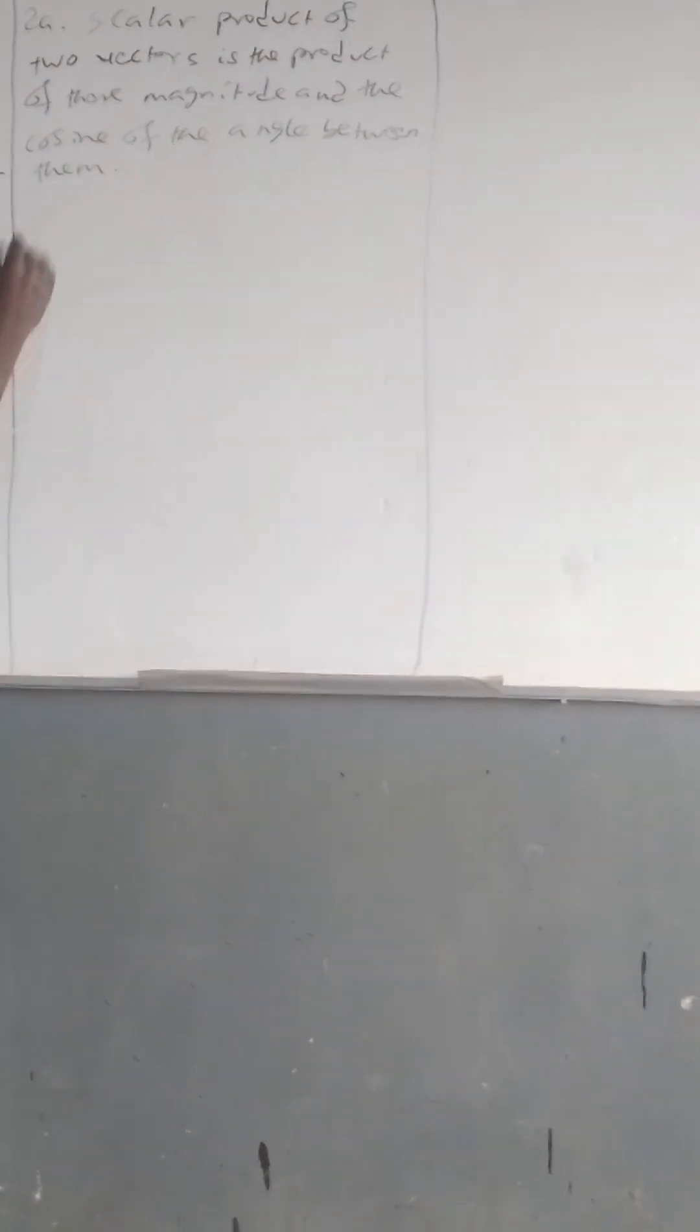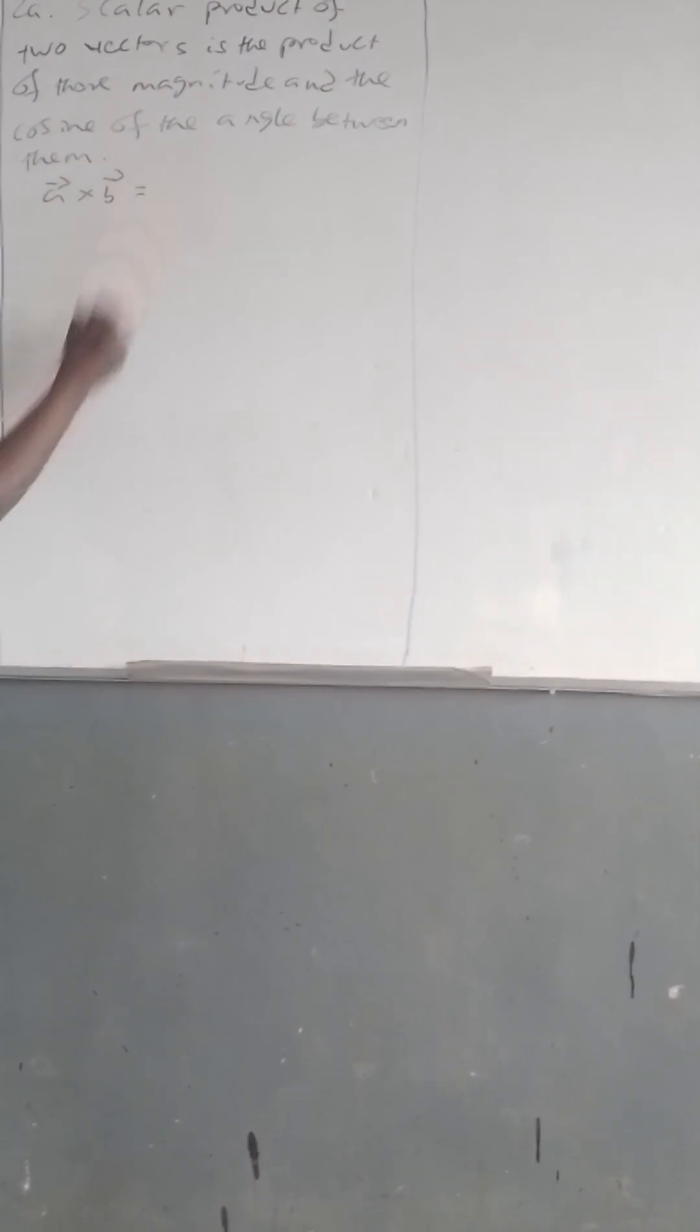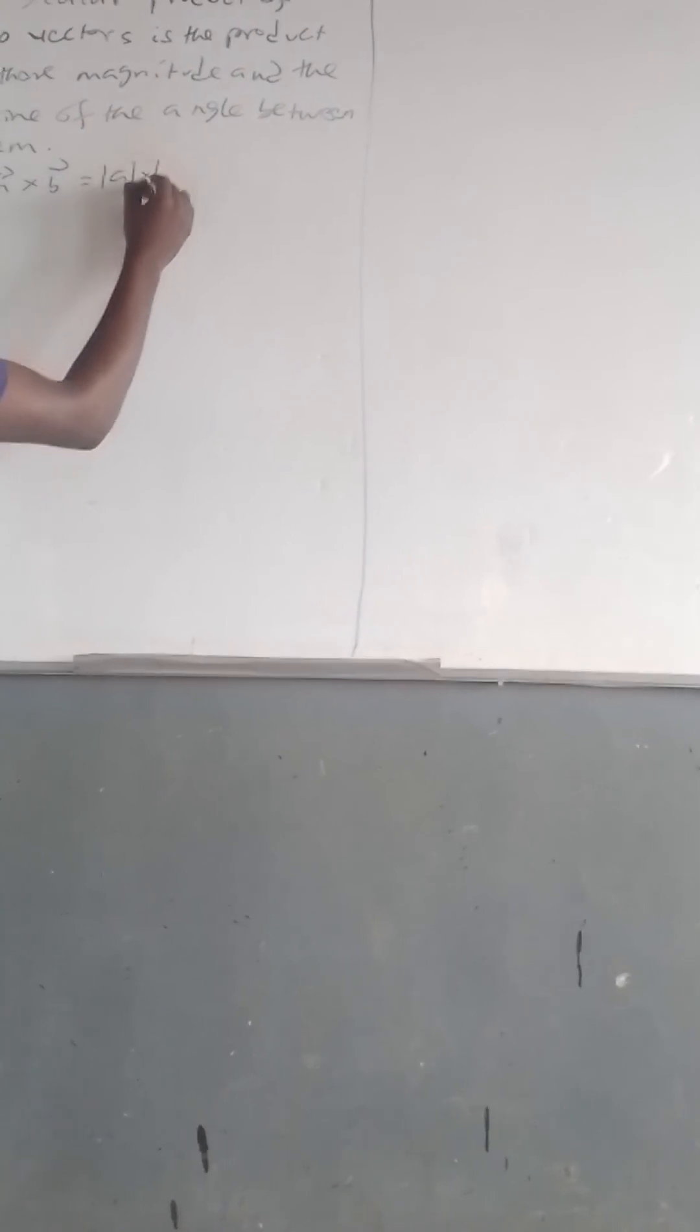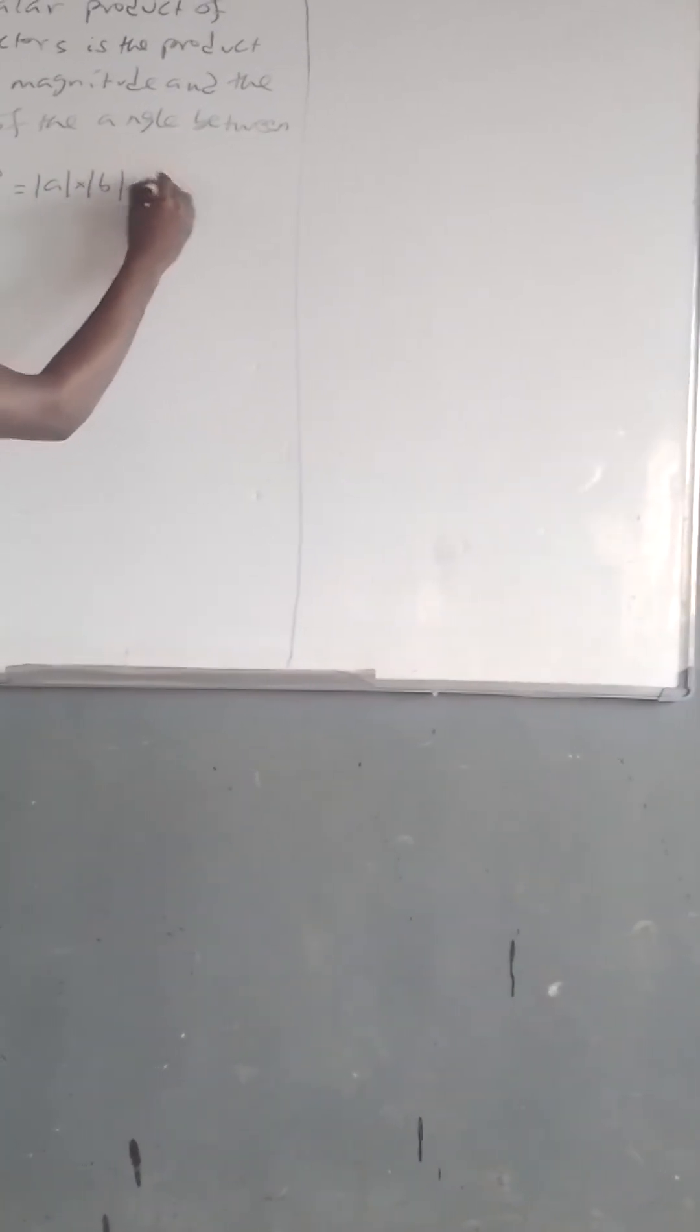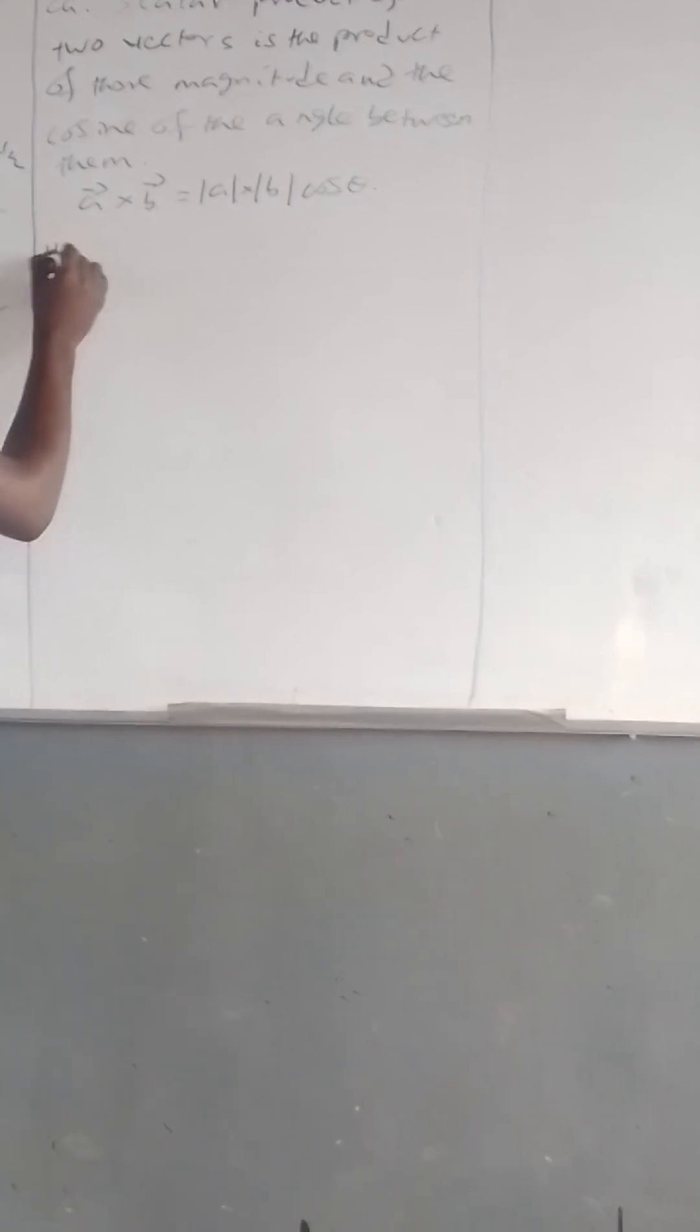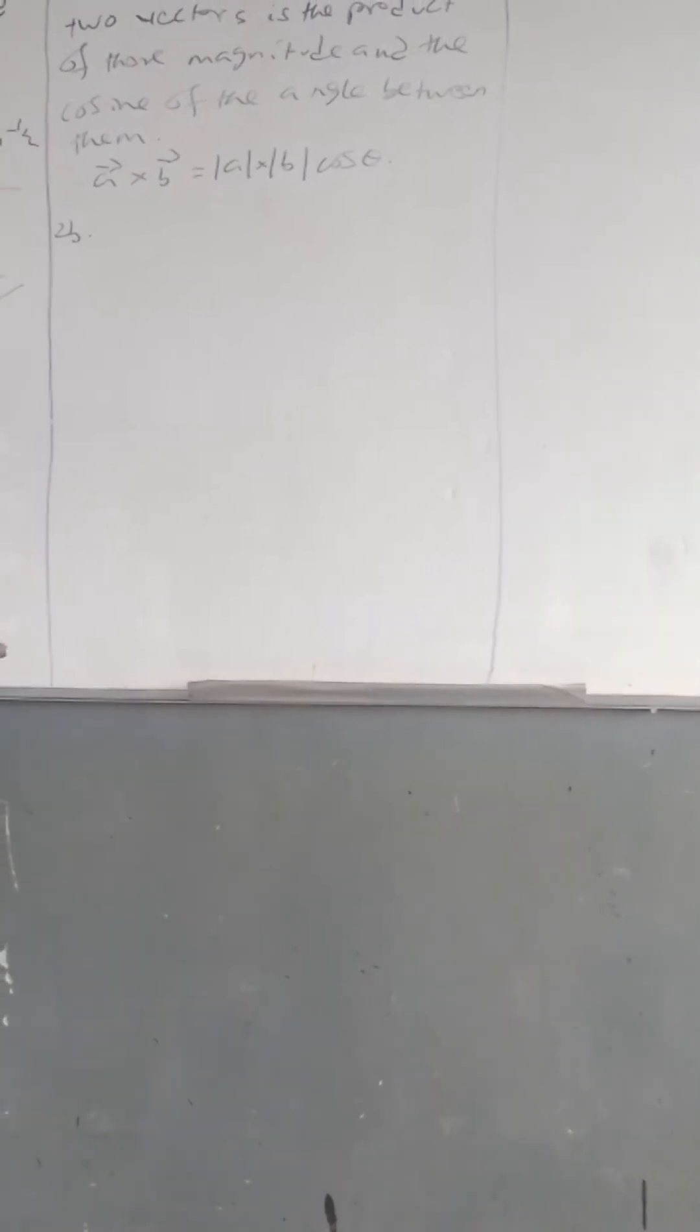We have two vectors, vector u and vector v. We are supposed to show that these two vectors are perpendicular. The condition for vectors to be perpendicular is that the dot product of the two vectors must equal zero.